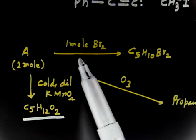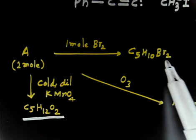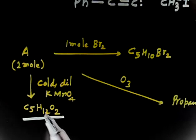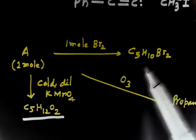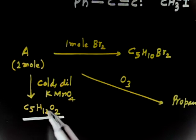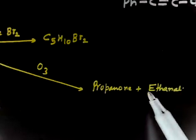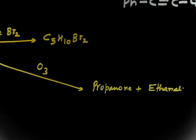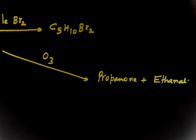In C5H10Br2, 2 bromines have been added. In C5H12O2, 2 OH groups have been added — you can see from the formula: 10 hydrogens become 12 hydrogens, so 2 H added, and you have 2 oxygens, so 2 OH groups added. Also, ozonolysis of A gives propanone and ethanal.